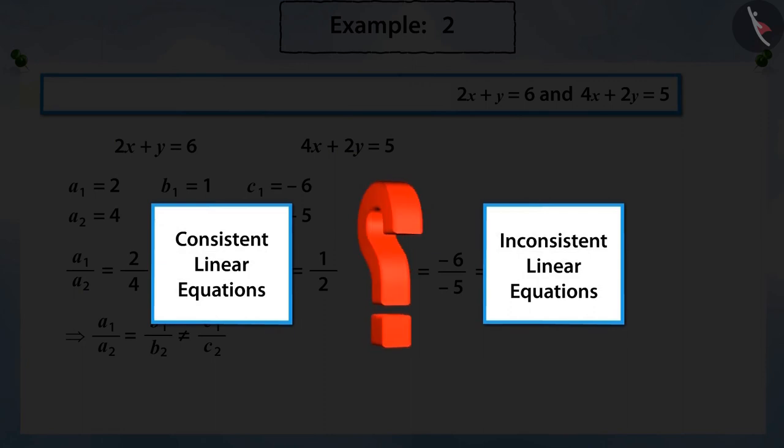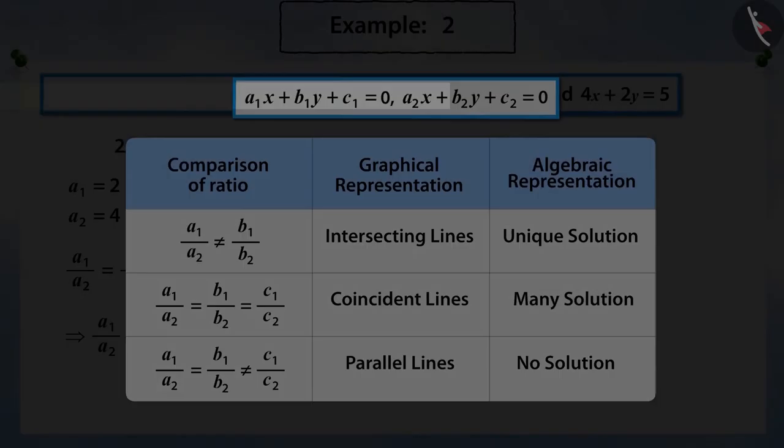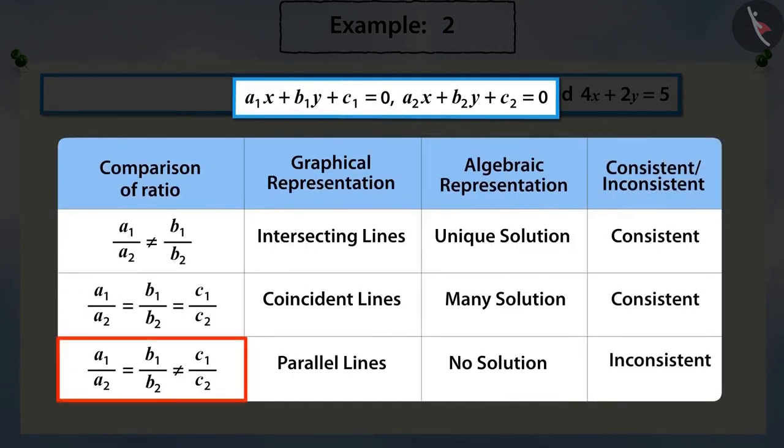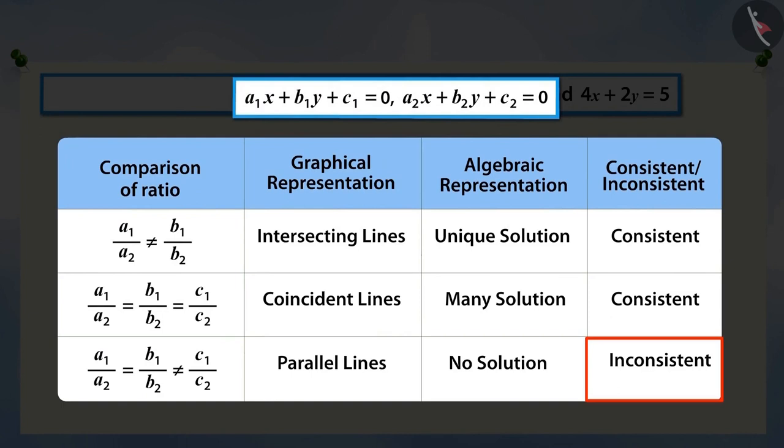Can you tell if the given pair of equations is consistent or inconsistent? Because this pair of linear equations does not have a solution, it is an inconsistent pair of linear equations.